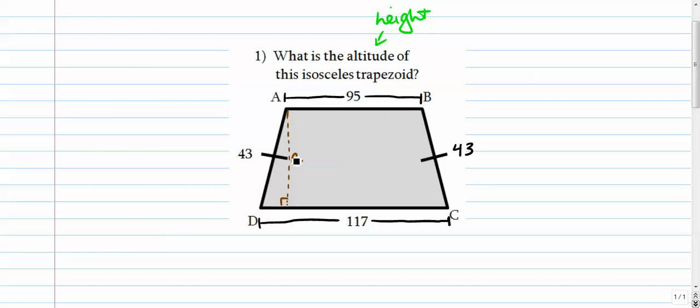And I'm given the fact that the whole base is 117 and this base, the whole thing, is 95. So in order to find the altitude of this we're gonna have to do a little bit of subtraction and a little bit of maybe Pythagorean theorem or something like that.